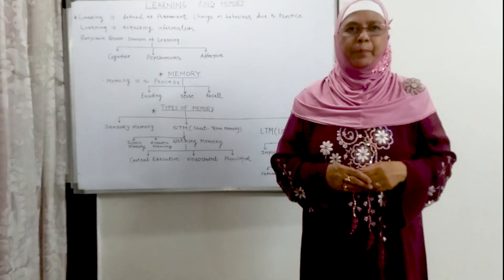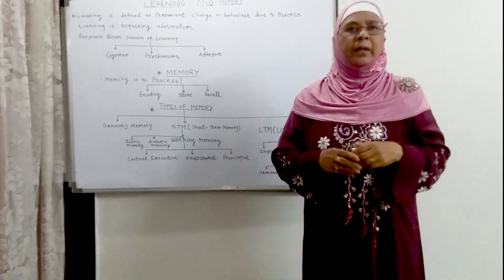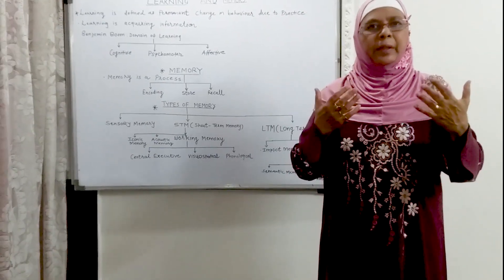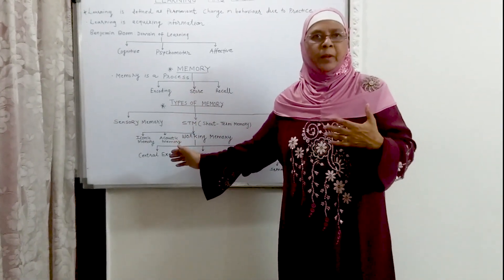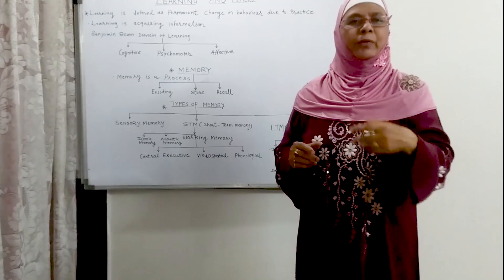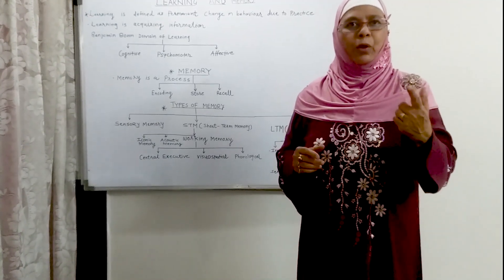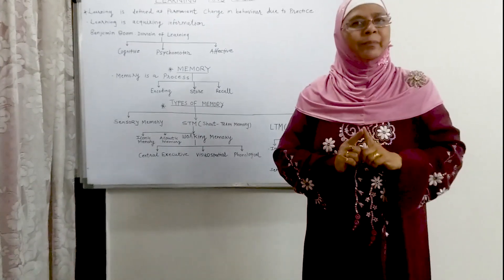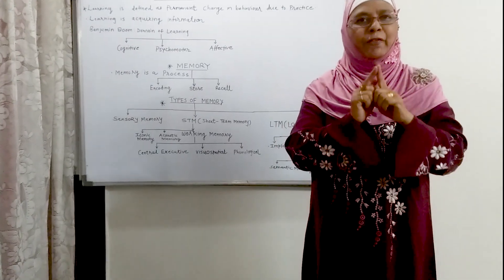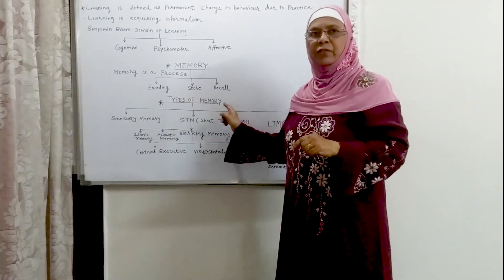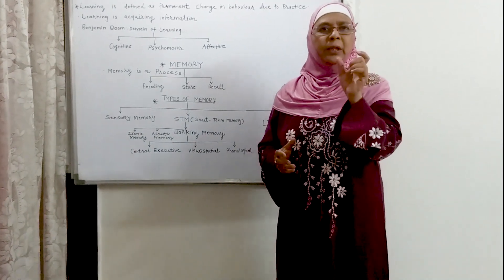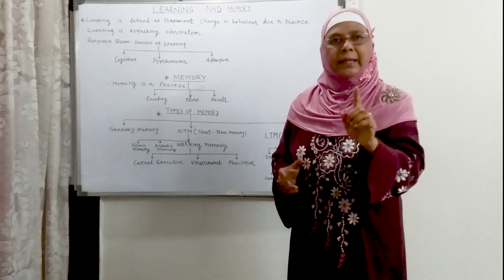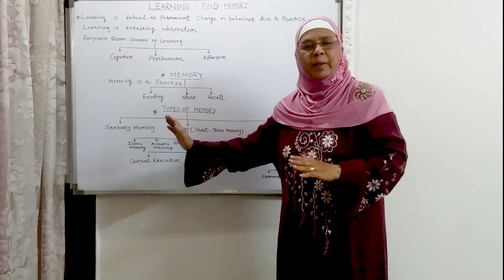Let me give you an example. We have gone to a crowded place where there are unknown people. We are looking at people and their images are getting registered in our sensory memory. But among them, we saw our friend or relative — immediately we spot them: 'Oh, this is my friend!' That is selection of information. You have attended to your friend, and that information has been processed further to the short-term memory. Only attended information — where you are interested, where you like something — is processed from sensory memory to short-term memory.